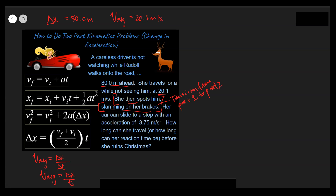It says her car can slide to a stop with an acceleration of minus 3.75. That means we're going to have a second part. Our acceleration for Part 2 is equal to minus 3.75 meters per second squared. When in doubt, look at the units — meters per second squared is clearly used to describe acceleration. The question asks how long her reaction time can be before she hits Rudolph, so what we're actually asking is: what is the time for Part 1? That's our unknown.